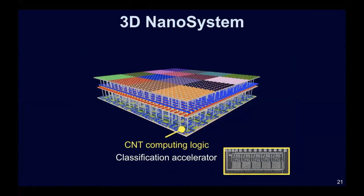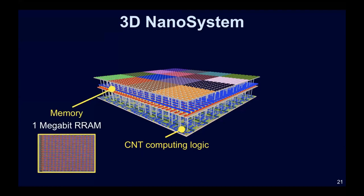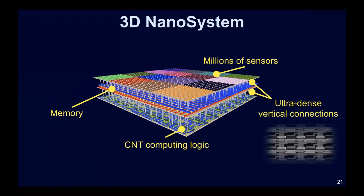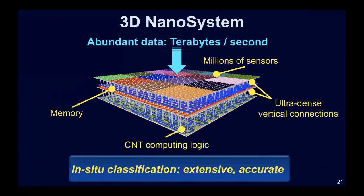At Stanford a few years back we demonstrated that kind of a 3D nano system — the most complex three-dimensional nano system that anybody has demonstrated today. We used carbon nanotubes for a machine learning accelerator with SVM classification, a megabit of resistive RAM, millions of sensors to collect data from the external world, and very dense vertical connectivity. This 3D nano system could grab abundant data — terabytes per second from the external world — store it in on-chip resistive RAM, and perform computation in situ for extensive and accurate classification. This is the dream of AI at the edge demonstrated in real hardware.